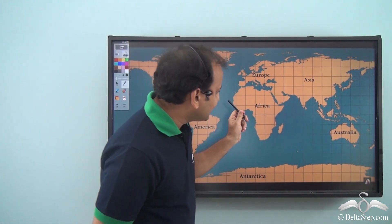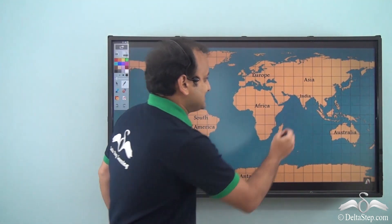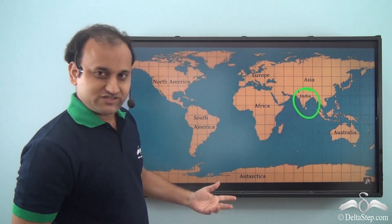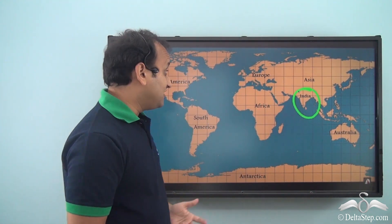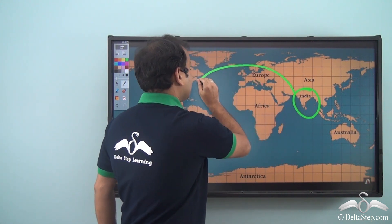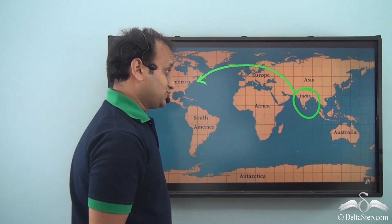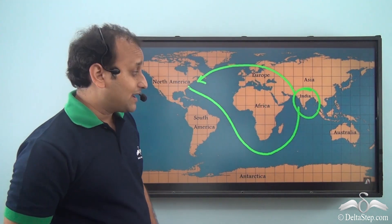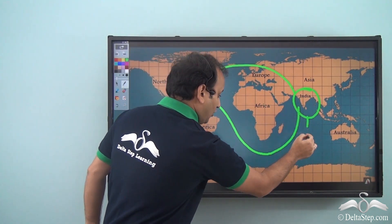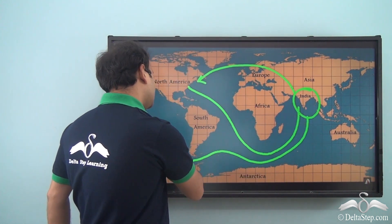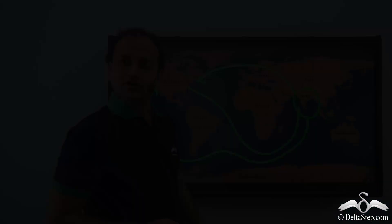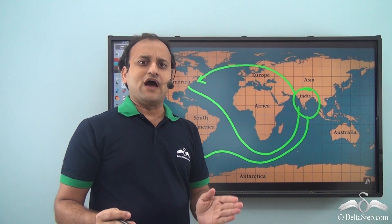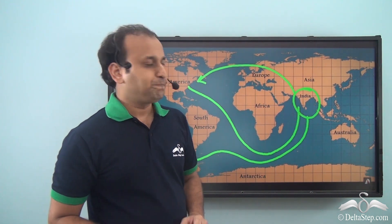Now where would you locate India on the world map? I think we can find it very easily — this is exactly where India is. So the entire world along with all its countries can be shown on a piece of paper. We can know how to travel from one place to another — whether by air taking this route or by sea taking another route to travel to North America. All routes can be planned if you have access to maps, so maps are really important.